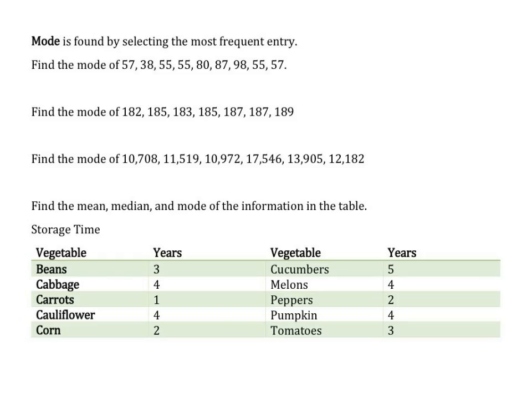Mode is found by selecting the most frequent entry. Find the mode of: 57, 38, 55, 55, 80, 87, 98, and 55. It looks like 55 shows up the most, so 55 is our mode.